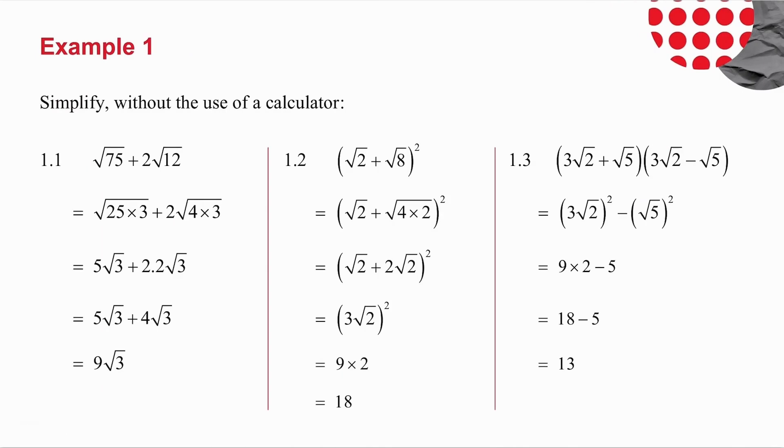What you've got to do in surds is you need to know your square numbers very well. One squared, two squared, three squared, four squared, five squared, and so on. So what you do is you think, what square number goes into 75? What's the biggest square number? So it's 25 times 3. 12, a square number that goes into it, it's 4 times 3. The square root of 25 is 5, and I'm left with root 3. The square root of 4 is 2, and I'm left with root 3. 2 times 2 is 4, and then these are like terms. 5 root 3 plus 4 root 3, it's like 5x plus 4x is 9x. This answer is 9 root 3.